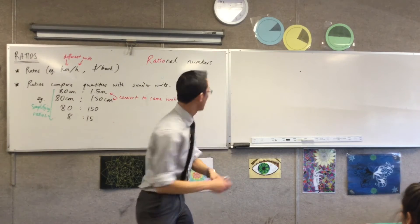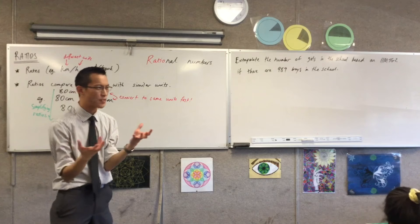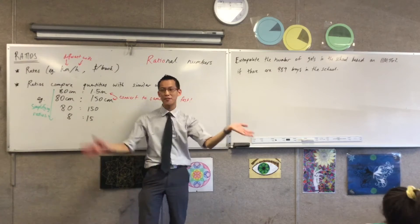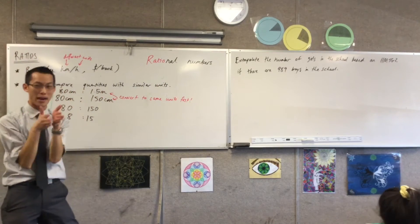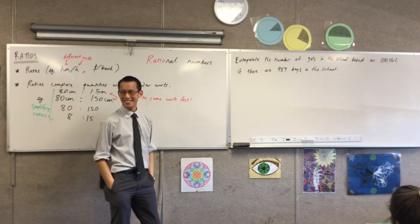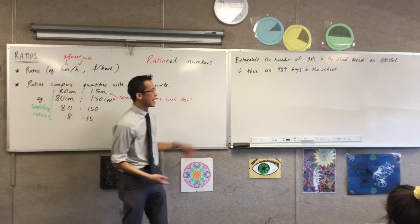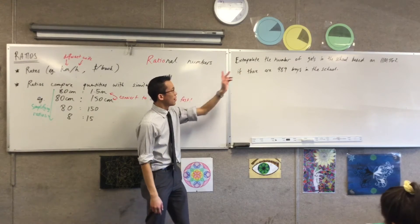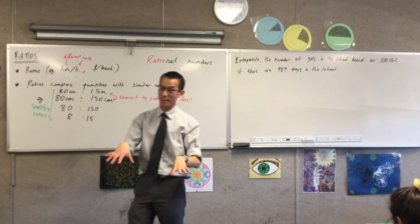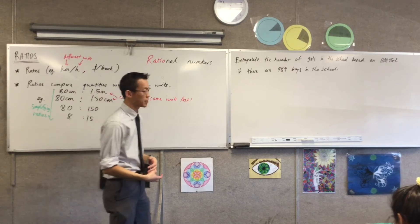Let me give you an example — here's a question. Extrapolate the number of girls in the school based on our class, given that there are 989 boys in the school. Extrapolate means infer something general from a small amount of information — take a small amount of information and try to get something general from it. Which is not exactly right, but it's pretty close.